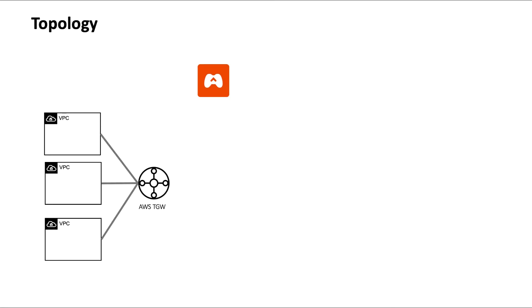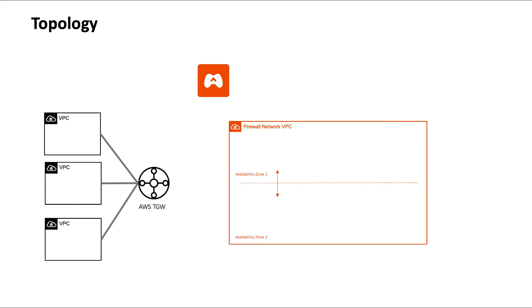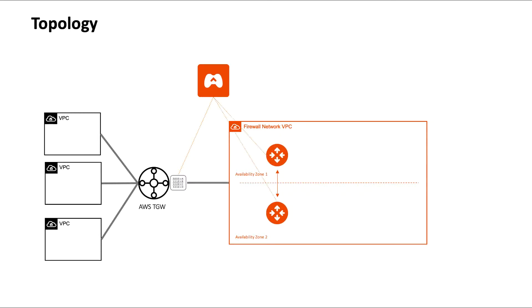Let's talk about what we will be building as part of this demo. The assumption is that the Aviatrix controller is already created, as well as the AWS Transit Gateway and the VPCs where the applications will be deployed into are already attached and created. We will then create a specific VPC that will house our firewalls — our firewall network VPC. We will create a security domain dedicated for our firewall network and then deploy Aviatrix Gateways. After the gateways are deployed and fully operational, we will deploy the firewalls and attach them to the gateways.